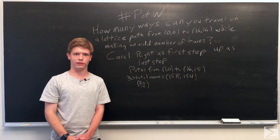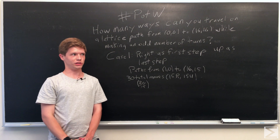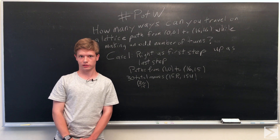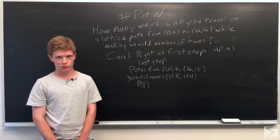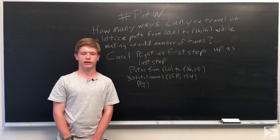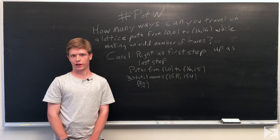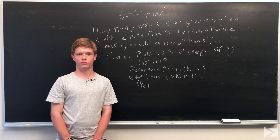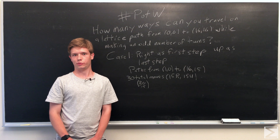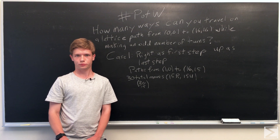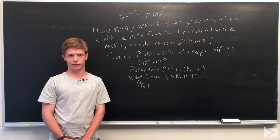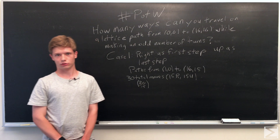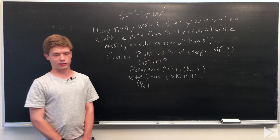Our first case will be going right as the first step, and so we have to get from the point (1,0) to (16,15). We'll have to make 30 total moves, and out of those moves, 15 of them will have to be to the right, and 15 of them will have to be up. So the number of ways we can choose to make these 15 right moves out of the 30 total moves is 30 choose 15. So for our first case we'll have 30 choose 15 paths.